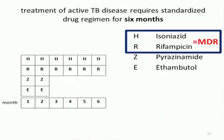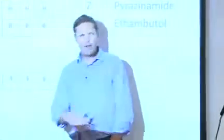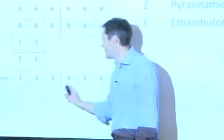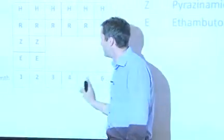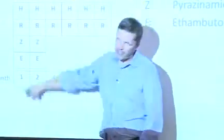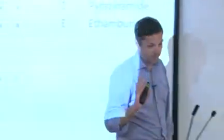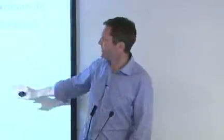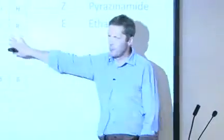What treatment will Diego get? He'll get what everyone should get for TB: a standardised treatment regimen. There are four drugs, each indicated by a different letter. He'll get what we call short-course chemotherapy — a six-month course. For the first two months he'll get four drugs, then for the remaining four months he'll get two drugs. Quite a lot of pills every single day, taken every day at the health centre under direct observation.